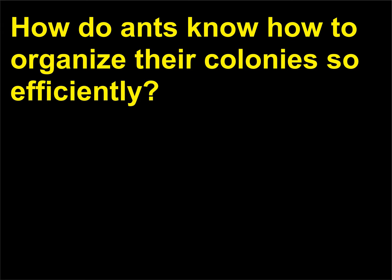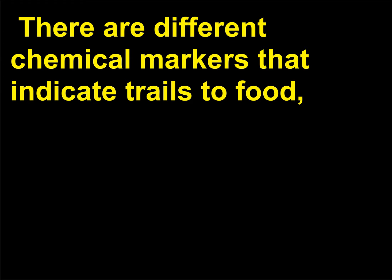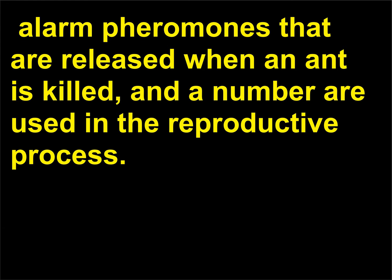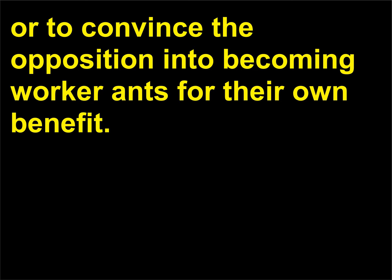How do ants know how to organize their colonies so efficiently? There are different chemical markers that indicate trails to food. Alarm pheromones are released when an ant is killed, and a number are used in the reproductive process. Some ant colonies even use pheromones to trick enemy colonies into attacking themselves, or to convince the opposition into becoming worker ants for their own benefit.